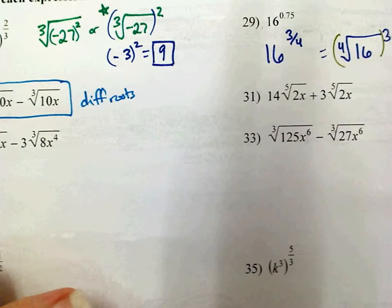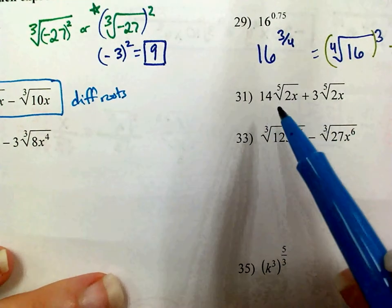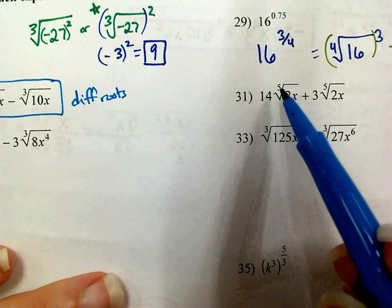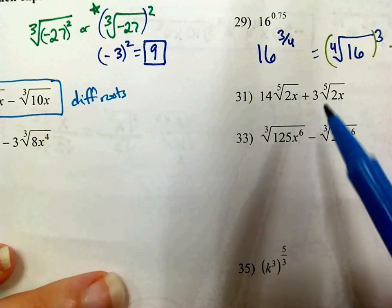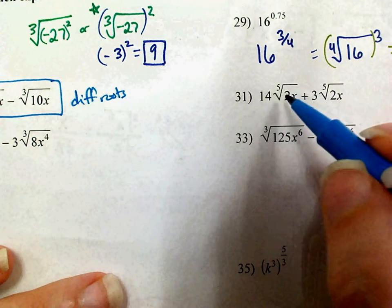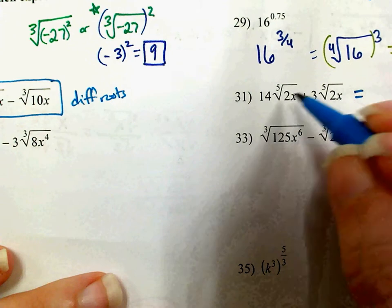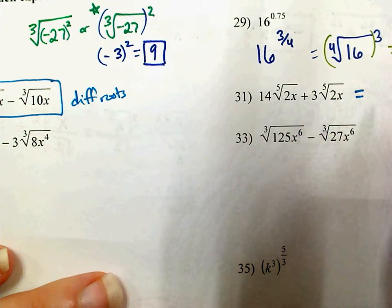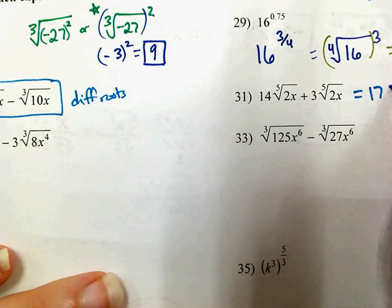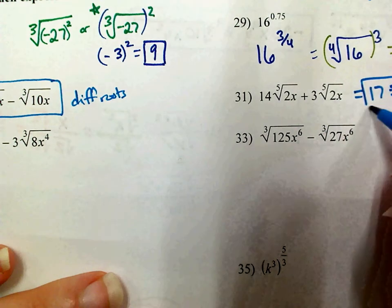On number 31, I've got the 5th root on both, and I have 2x on both. Since the radicands and the roots are the same, I can simplify: 14 of these plus 3 of these is 17 of these. That is my answer.